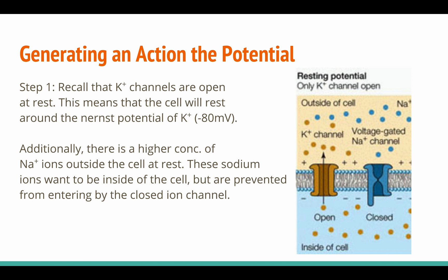Now we're going to talk about how action potentials are generated. I've broken it down into a five-step process, beginning with the neuron in its resting state. First, recall that the potassium channels are open at rest, meaning the cell rests around the equilibrium potential of potassium at around negative 80 millivolts. Additionally, there is a higher concentration of sodium ions outside the cell at rest; these sodium ions want to enter the cell but are prevented by the closed ion channel.